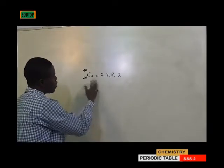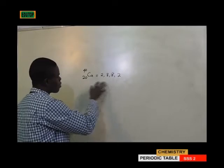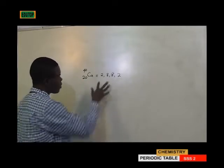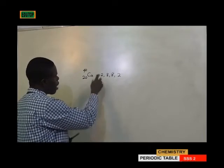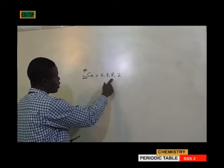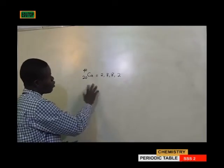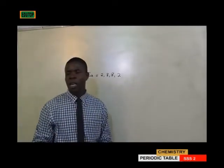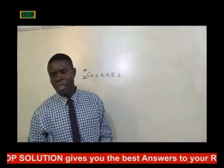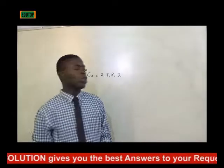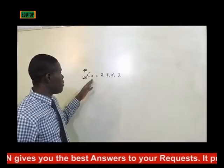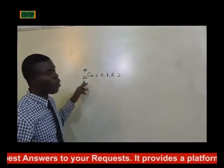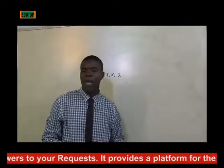Calcium will be in period 4 because elements are arranged in periods based on the number of shells. Counting the shells: 1, 2, 3, 4 — so this element is in group 2, period 4. This shows that placing elements in groups and periods depends on the atomic number.